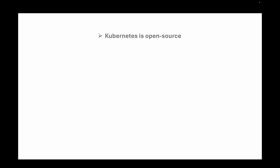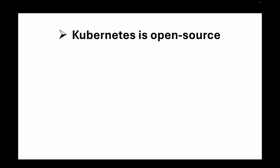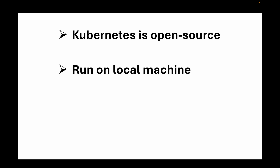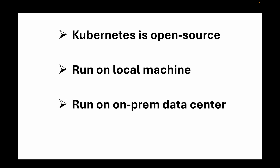Kubernetes is open source, which means we can run it anywhere — on a local machine to orchestrate containers on your laptop, in an on-premises data center, or in the cloud. But no matter where you choose to run Kubernetes, one thing is common: you will need to create and manage a control plane as part of your cluster. The control plane is where all the activities take place, and without it you cannot have a Kubernetes cluster.